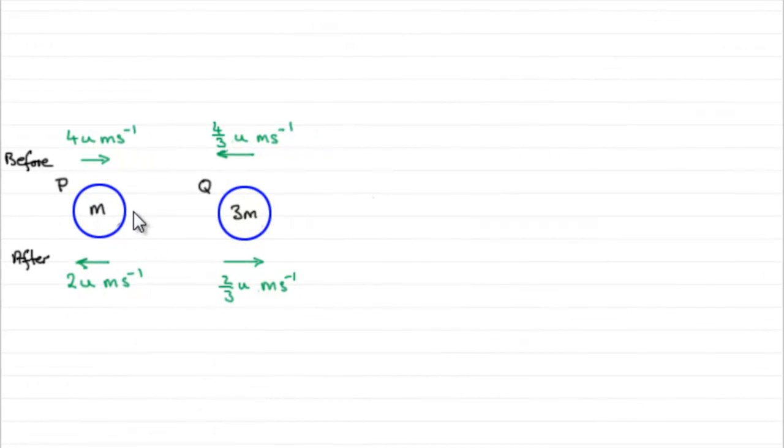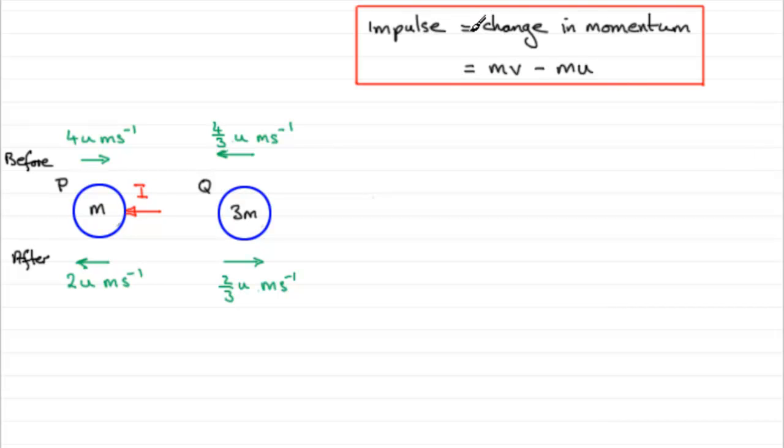Now we've got to find the impulse that Q gives P when they collide. To do this, I would want to mark in that impulse. It acts towards the left and I'm going to call it I. To work out impulse, we've got to remember that impulse is equal to change in momentum. In other words, the final momentum minus the initial momentum. But momentum is a vector quantity, so you've got to be very careful in questions like this. Make sure you set up a positive sense.